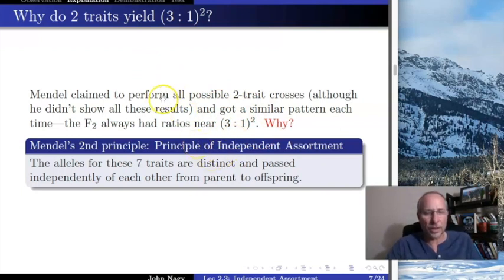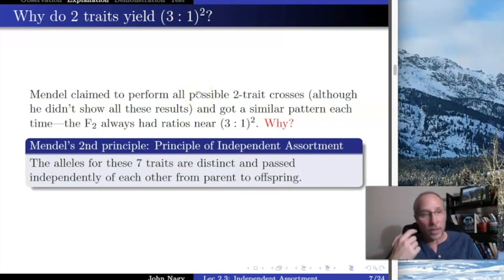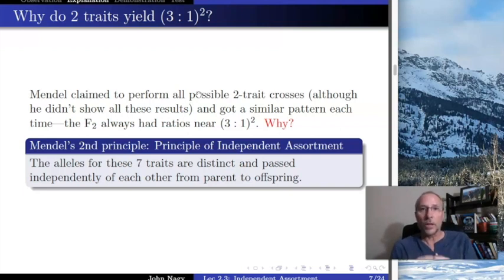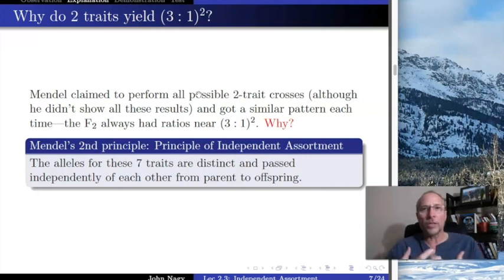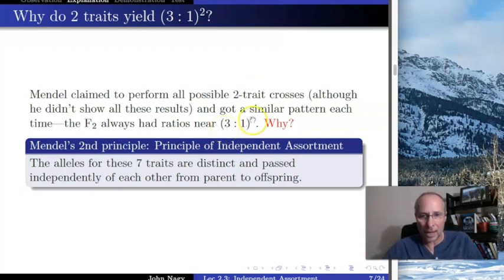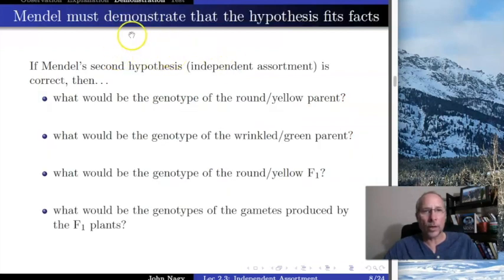All seven of those traits are independent of each other, meaning choose any two of them and do this experiment — you're going to get a 3-to-1 squared ratio in the F2. That tells us things like seed color doesn't affect flower color, or whether the pod is green or yellow is independent of whether the seed is green or yellow. All of those combinations that are independent came from a 3-to-1 squared, because the only way to get a 3-to-1 squared is if they're independent.